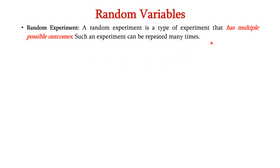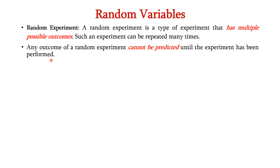A random experiment is a type of experiment that has multiple possible outcomes. Such an experiment can be repeated many times. Any outcome of a random experiment cannot be predicted until the experiment has been performed. Examples of random experiments are tossing a coin and throwing a dice.